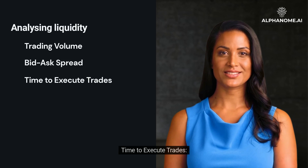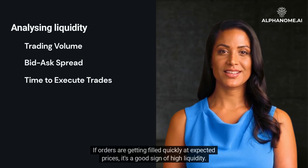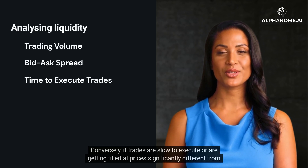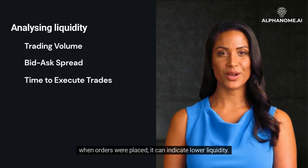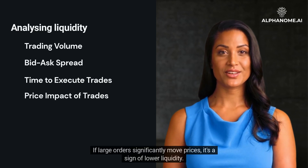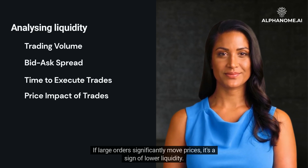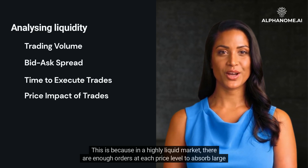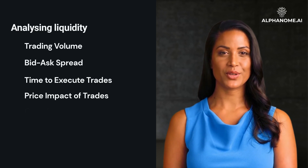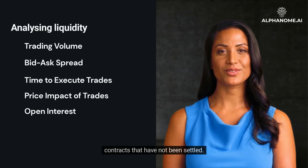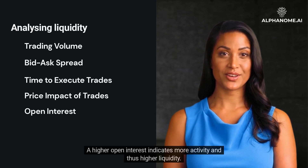Time to Execute Trades: If orders are getting filled quickly at expected prices, it's a good sign of high liquidity. Conversely, if trades are slow to execute or are getting filled at prices significantly different from when orders were placed, it can indicate lower liquidity. Price Impact of Trades: If large orders significantly move prices, it's a sign of lower liquidity, because in a highly liquid market there are enough orders at each price level to absorb large trades without substantial price changes. Open Interest: In the context of futures and options markets, open interest refers to the total number of outstanding contracts that have not been settled; higher open interest indicates more activity and thus higher liquidity.